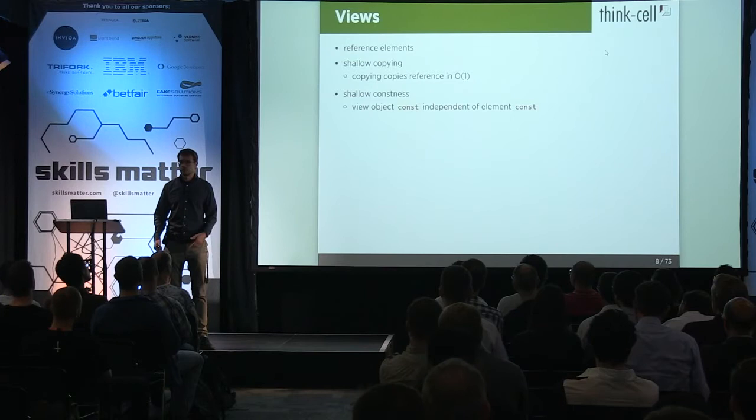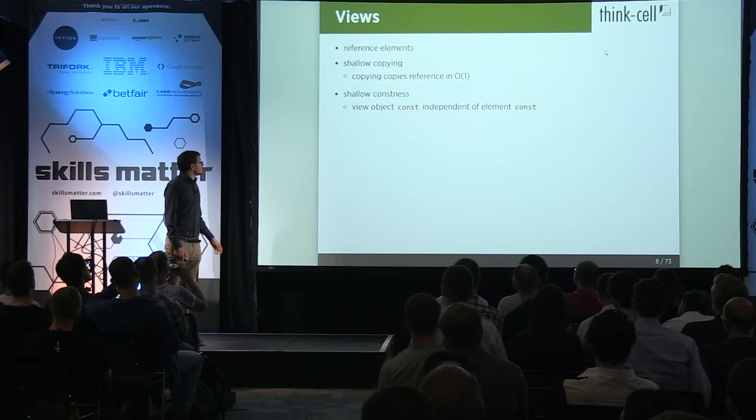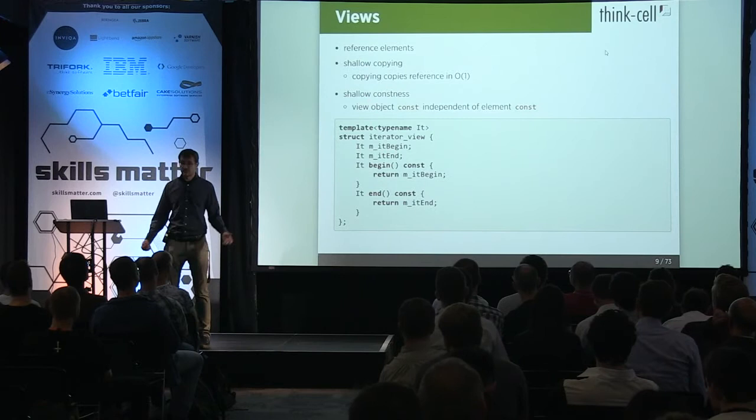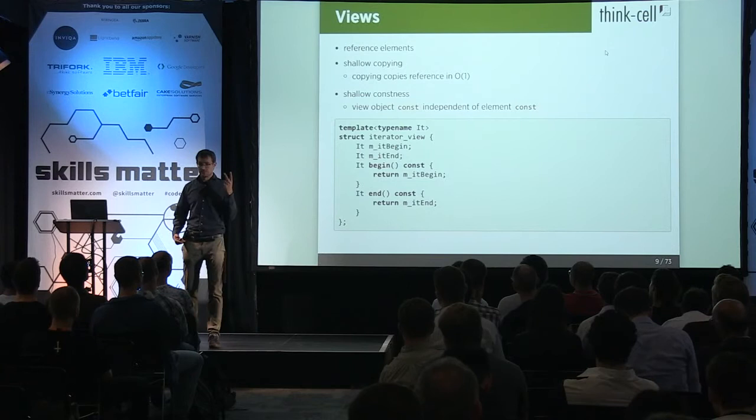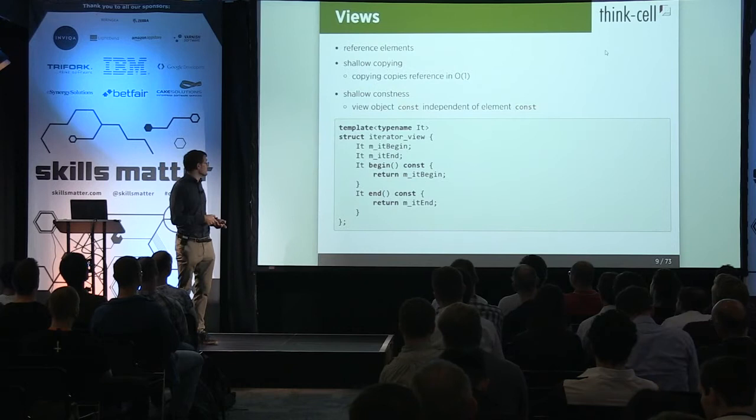A very simple view is just a pair of iterators that you pass around everywhere, replaced with a single object — that's a view, specifically an iterator view. You can use it as you can see here: it has a begin, it has an end, and you can use it very much like a container, and that's the beauty of it.